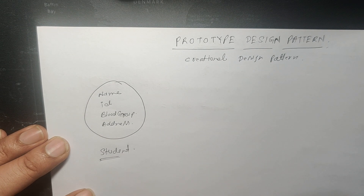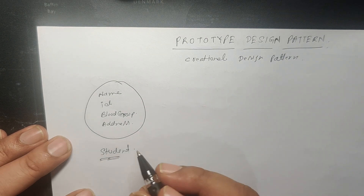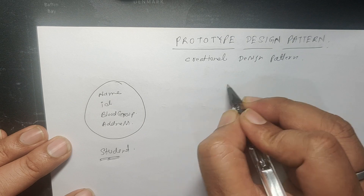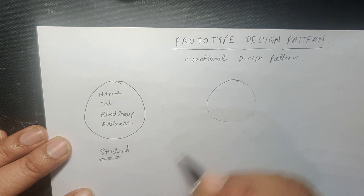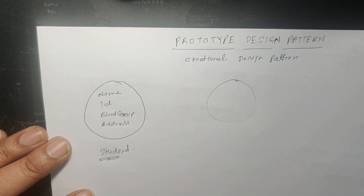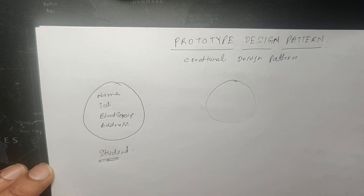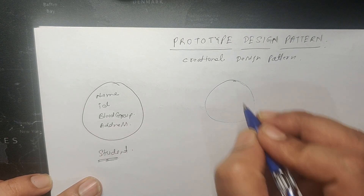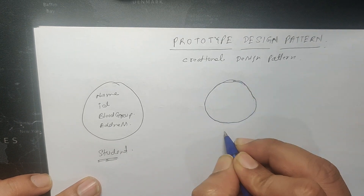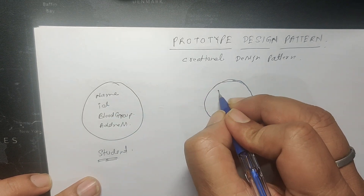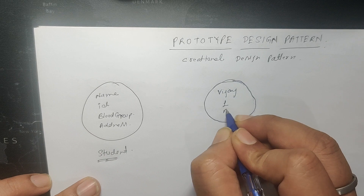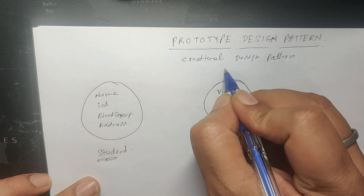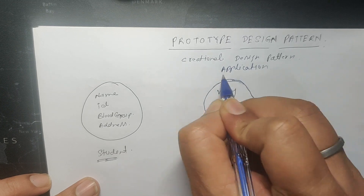This is one object of type Student. Now suppose I am writing code where my driver class is using the Student class and creating an object of it. In that driver class I have created a Student object std1 with name as Vijay, ID as 1, blood group as B positive, and address as Mumbai. So this object has been created in my application.